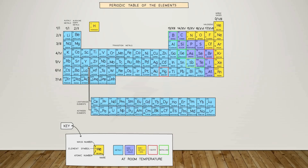We also have a key here if you are confused. If you take the atom of helium as an example, we can see it has a mass number of four — the larger number is the mass number, as discussed in previous videos — and the atomic number is two, along with the element symbol and its name.